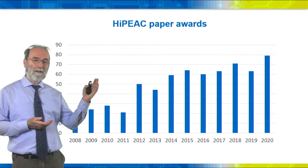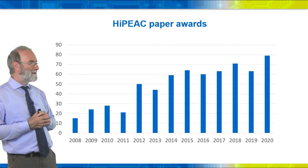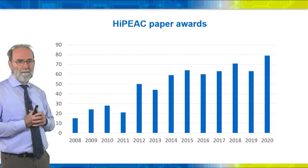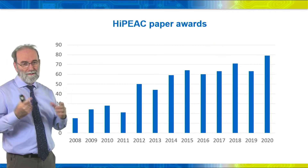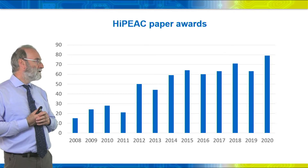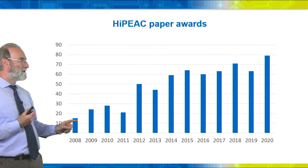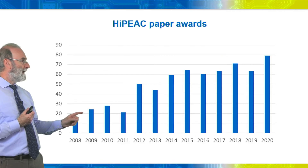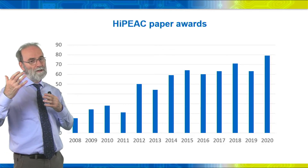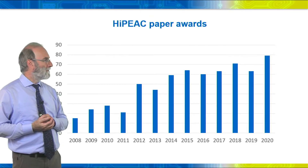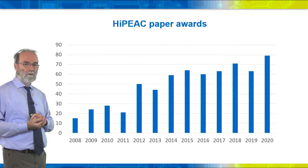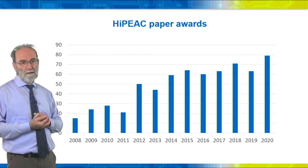We also have awards, which are particularly for university professors, postdocs, and PhD students. We have HiPeak paper awards started in 2008. We maintain a shortlist of HiPeak award conferences — key conferences in the HiPeak domain like computer architecture and compilation. In 2008 we had around 15 papers from our members at these conferences; today we have between 60 and 70. We believe the award of 1,000 euro per accepted paper really stimulated the community to submit more often to these conferences, creating higher visibility for European research in this area.